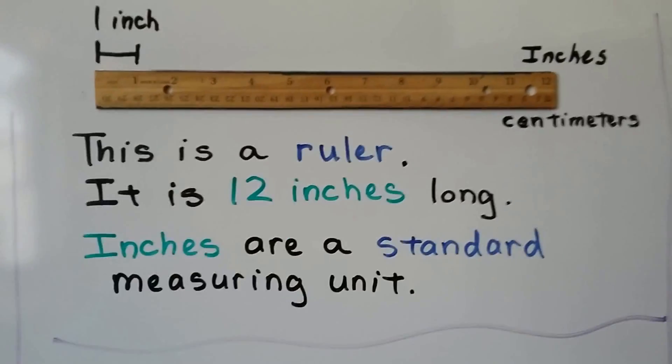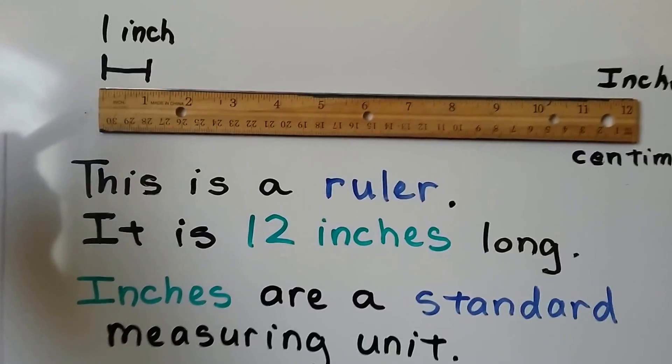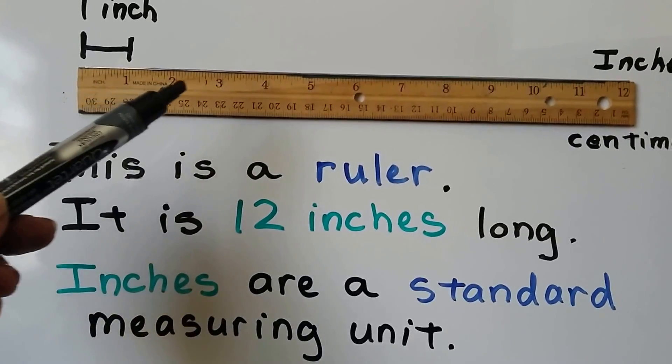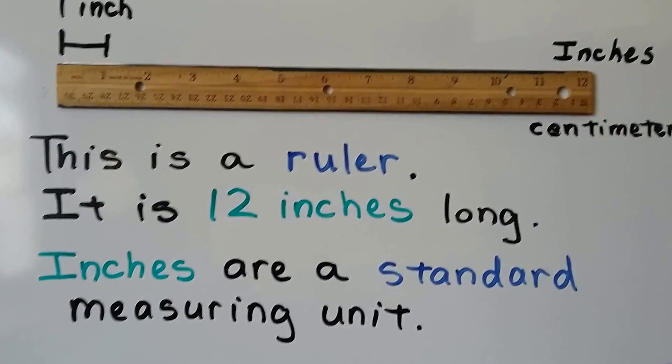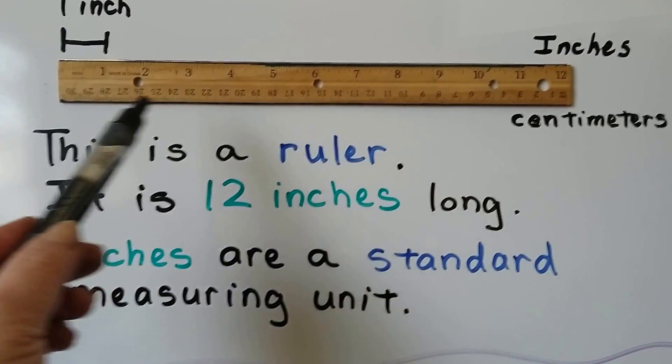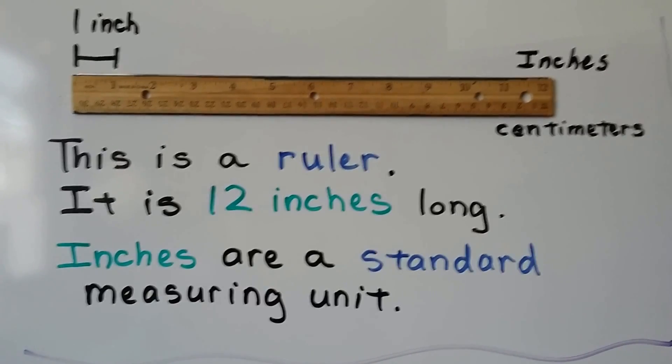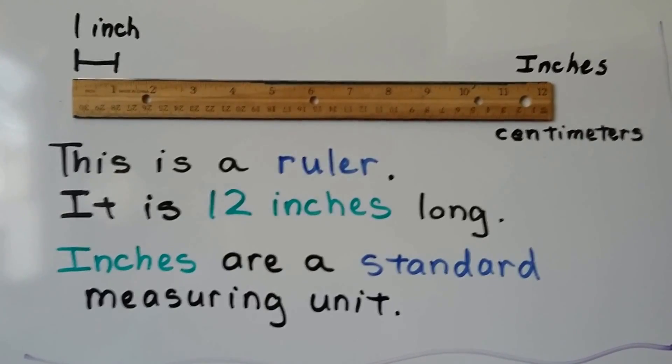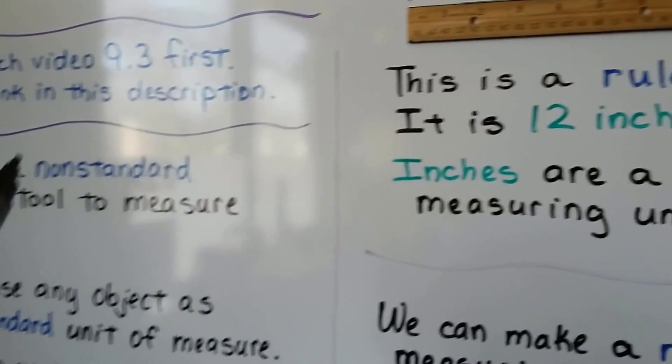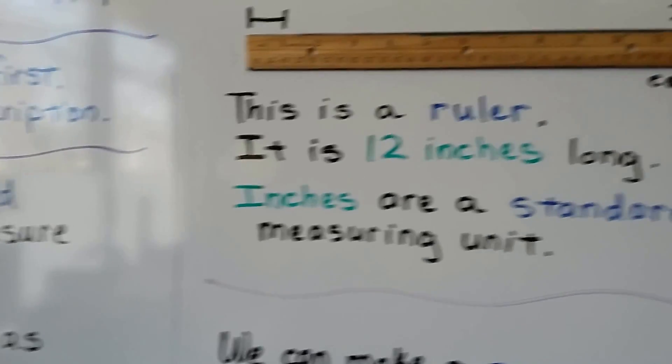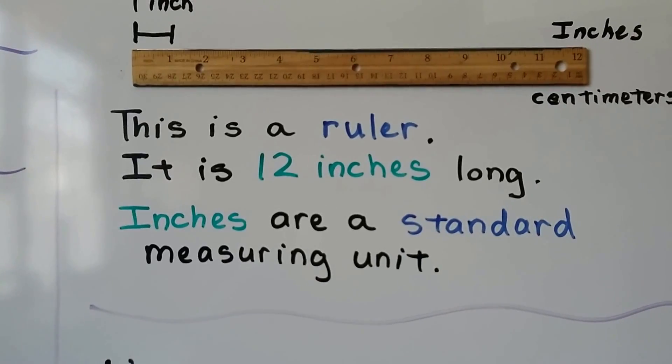This is a ruler and you're going to learn more about this in second grade. Up here are inches. Each of these numbers is one inch. The numbers down here are centimeters. This ruler is 12 inches long and inches are a standard measuring unit. We're learning about non-standard measuring units. So this is what a standard one would look like.